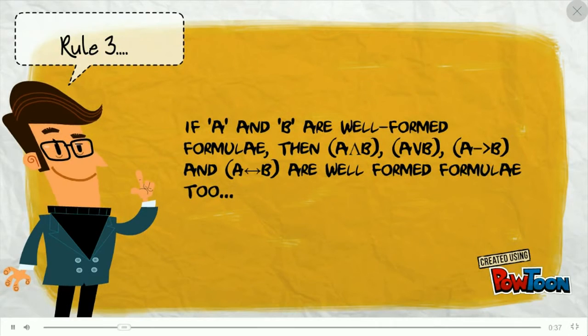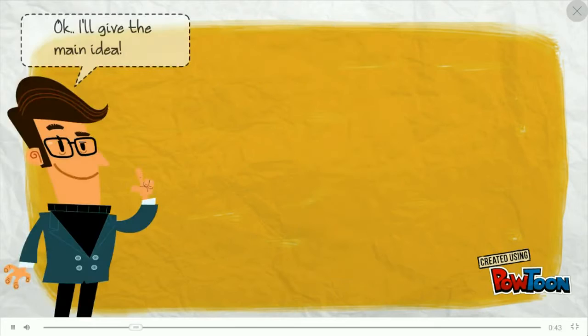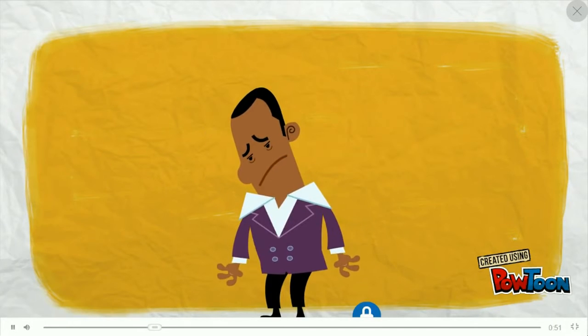Rule 3: Here are some examples of well-formed formulas. Stop! That was too hard. Ok, I'll give the main idea. A string of symbols containing variables, connectives, and proper use of parenthesis is a well-formed formula.